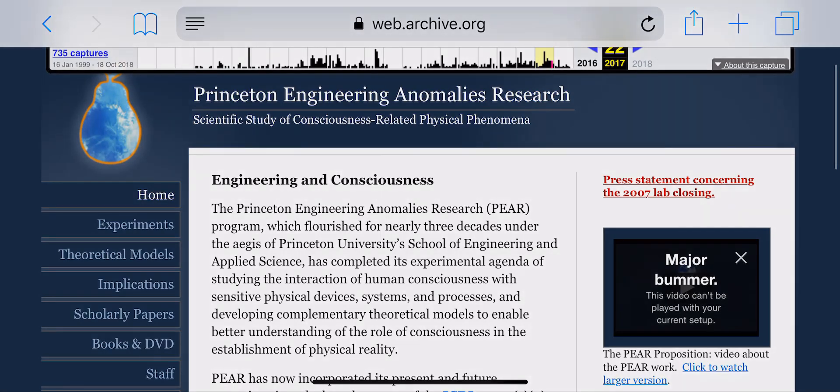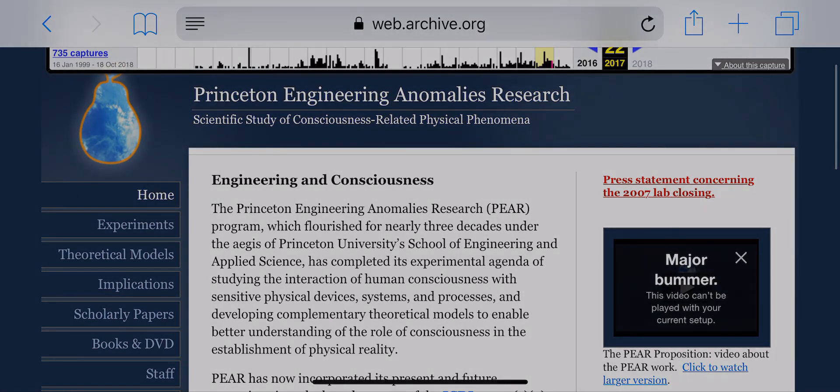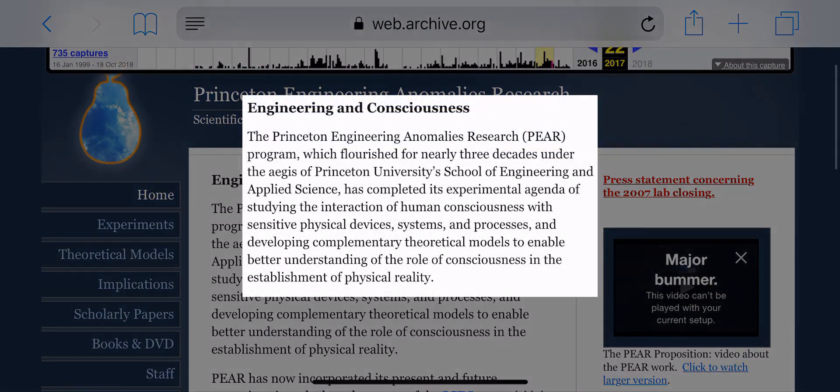The first key point is on the home page: Engineering and Consciousness. The Princeton Engineering Anomalies Research program, PEAR, which flourished for nearly three decades under the aegis of Princeton University's School of Engineering and Applied Science, has completed its experimental agenda of studying the interaction of human consciousness with sensitive physical devices, systems, and processes, and developing complementary theoretical models to enable better understanding of the role of consciousness in the establishment of physical reality.